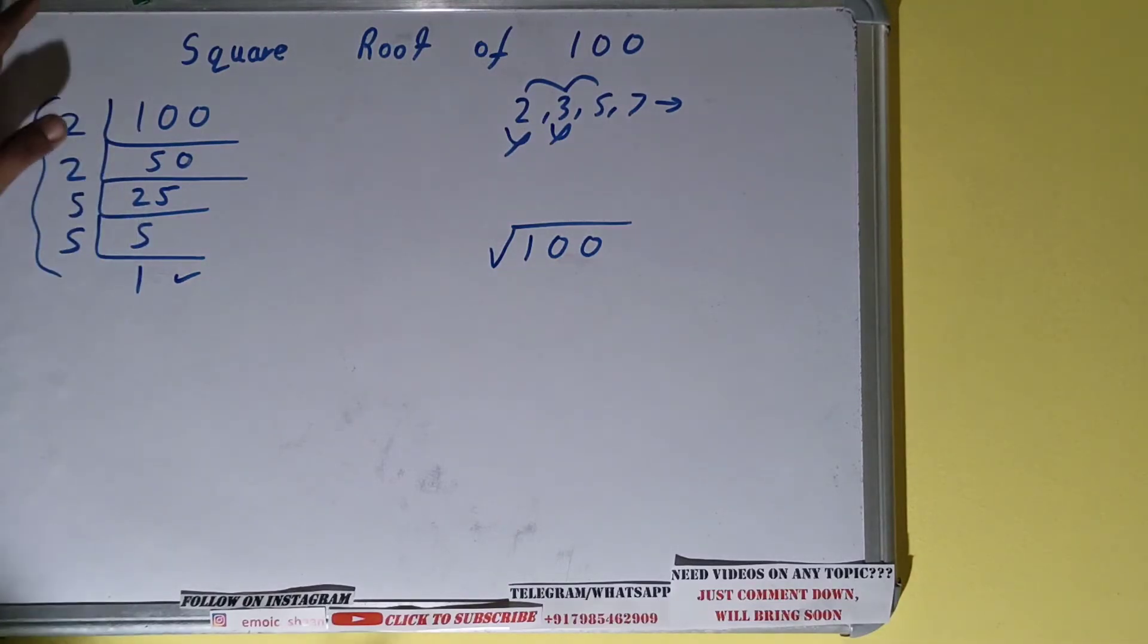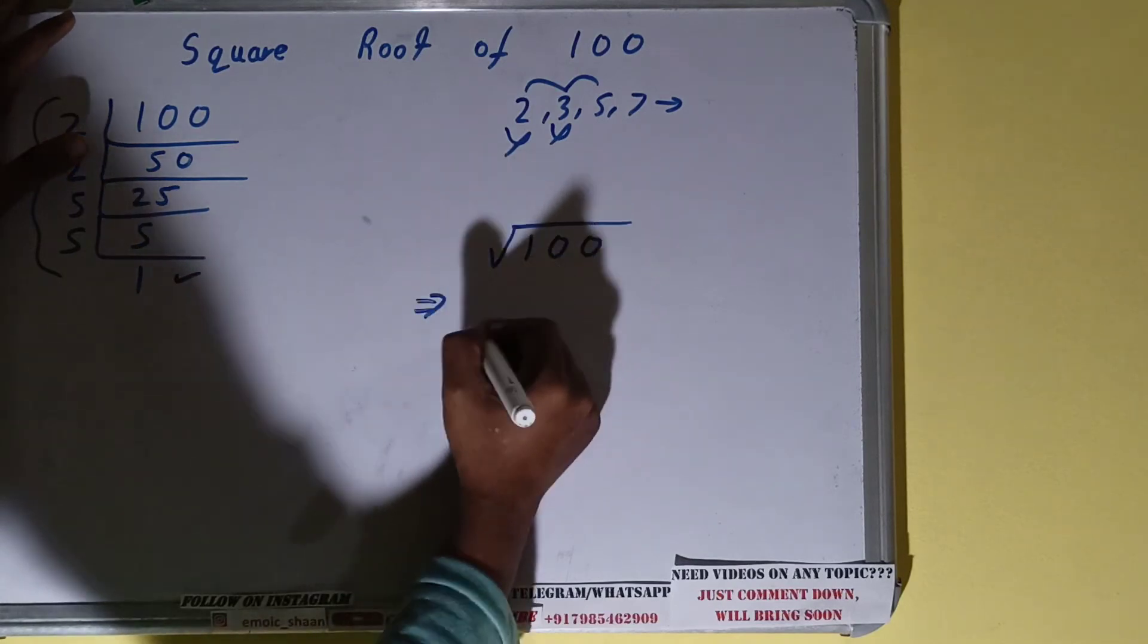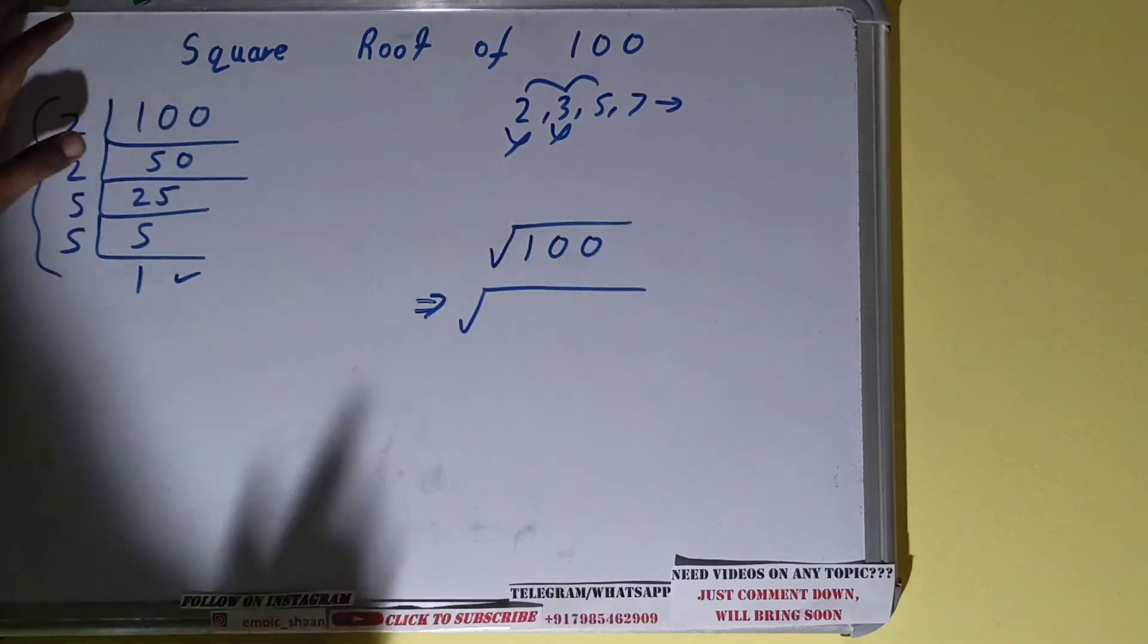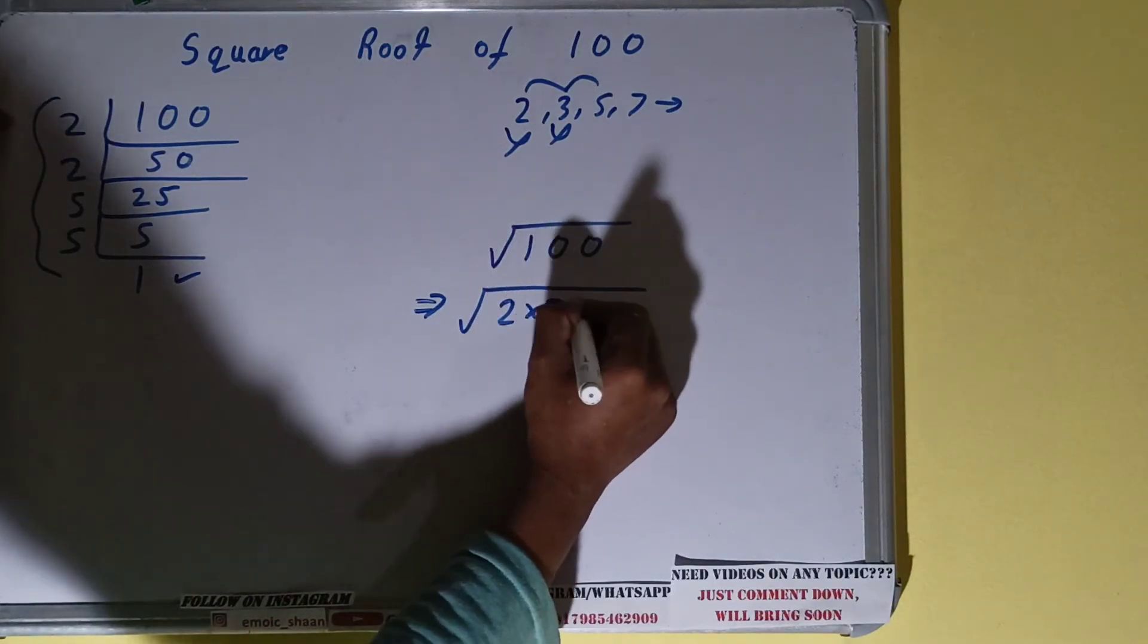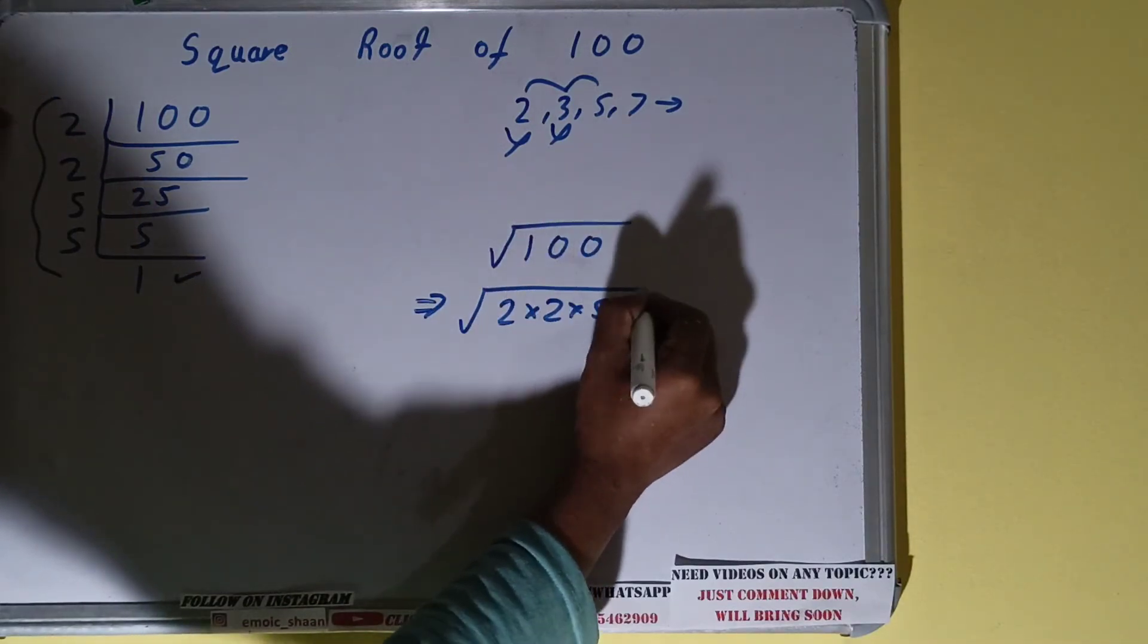So what we can do is we can write the set of prime factors instead of the number 100. That is 2 × 2 × 5 × 5.